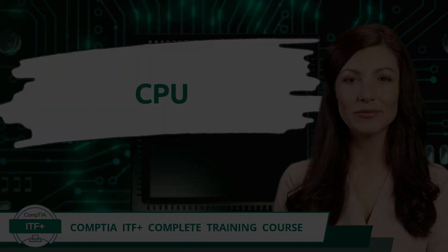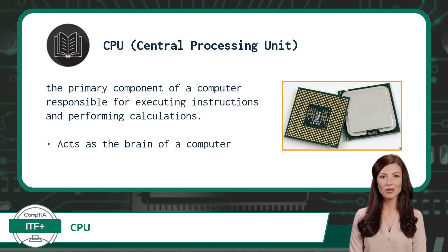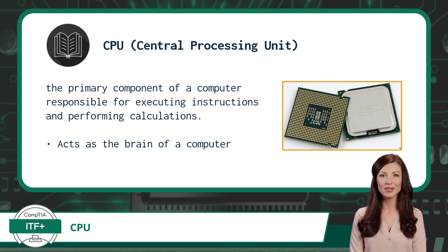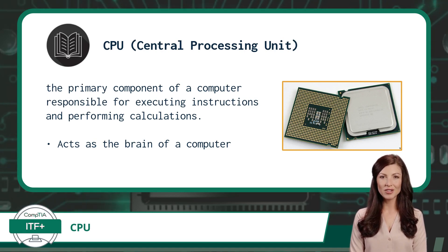CPU. The central processing unit, or CPU for short, is the primary component of a computer responsible for executing instructions and performing calculations. The CPU acts as the brain of the computer, carrying out essential tasks such as arithmetic operations, logical comparisons, and managing data movement between various hardware components. It interprets and executes instructions from computer programs, allowing the computer to perform tasks and run applications.